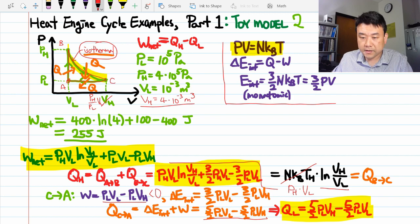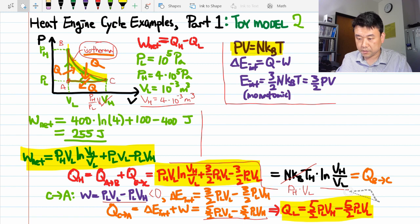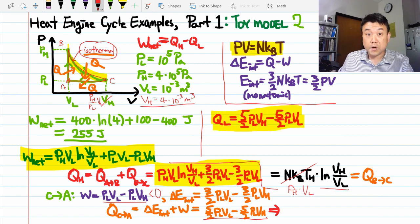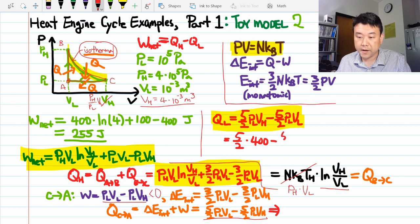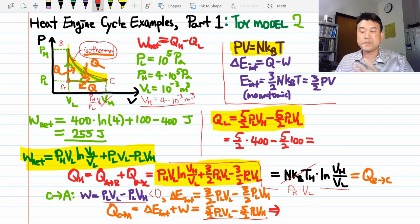Huh, that's interesting. Alright, let's calculate the heat expelled from the system. Let me move this so that there's room to write numbers. So, plugging the numbers, 5 halves PLVH or 400 Joules minus 5 halves PLVL or 100 Joules.